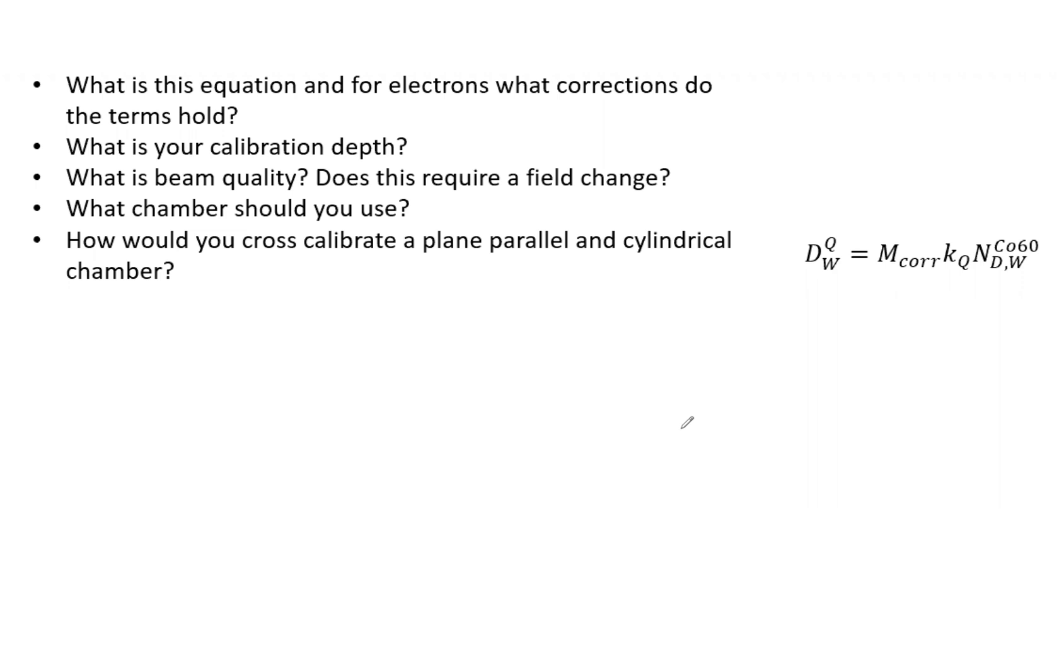With that being said, what is this equation? And for electrons, what corrections do the terms hold? What is your calibration depth? What is beam quality? Does it require a field change? What chamber should you use? And how would you cross-calibrate a plane parallel and cylindrical chamber?